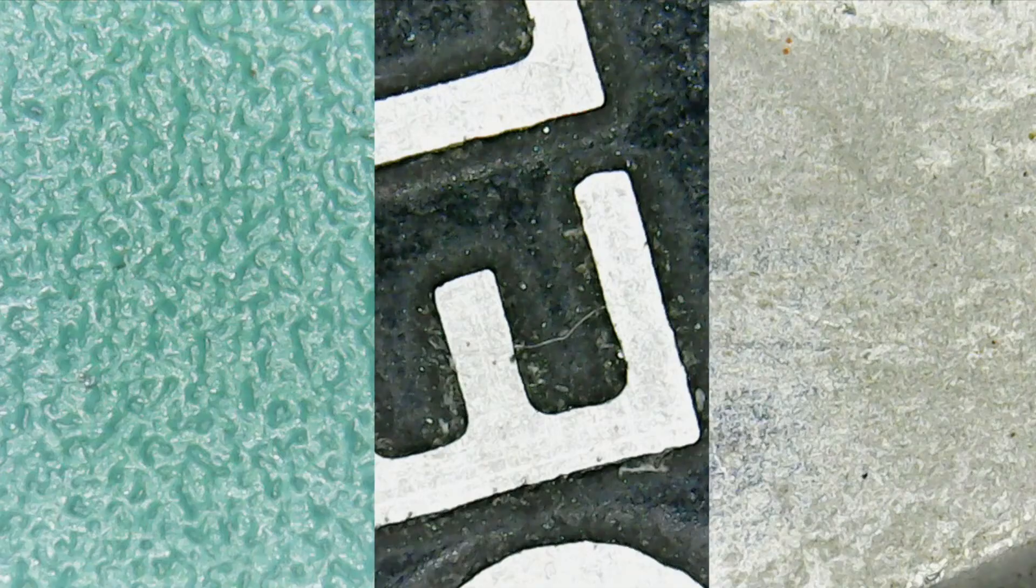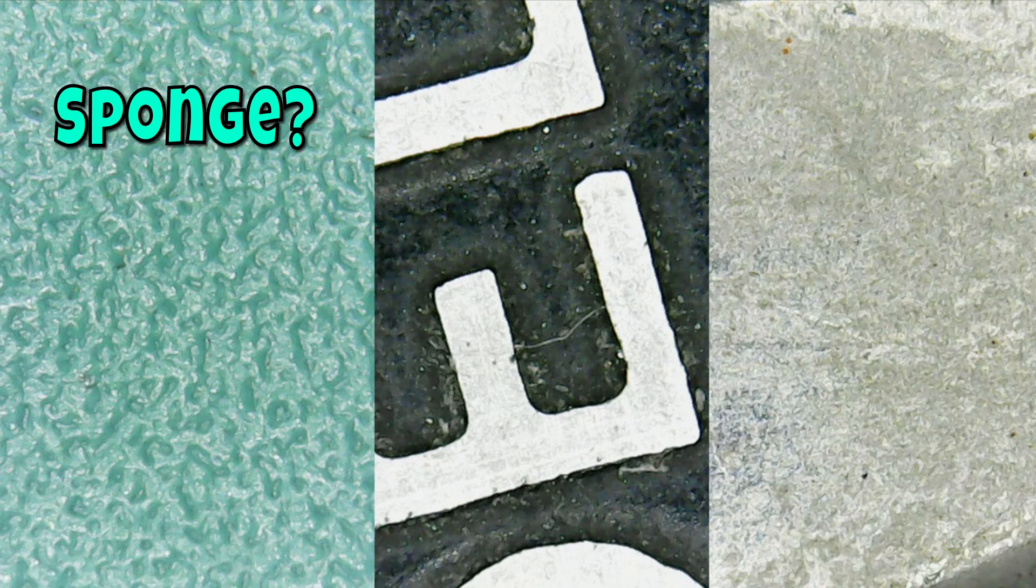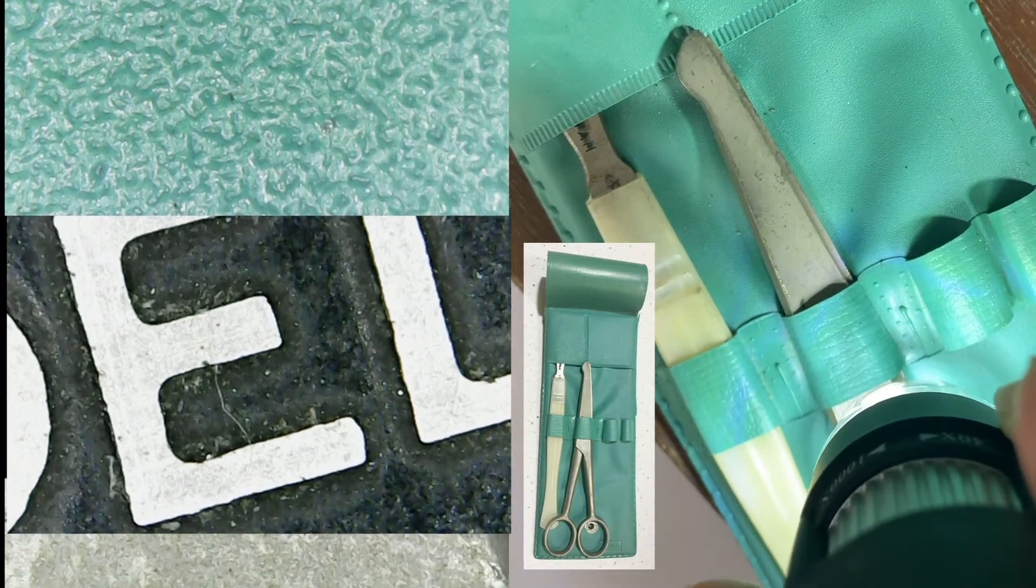What do you think those are? That's letters on something. That is letters. You're right, it is letters on something. And that's, like, a sponge thing. It does look like a sponge. Parts of the toolkit for my microscope.